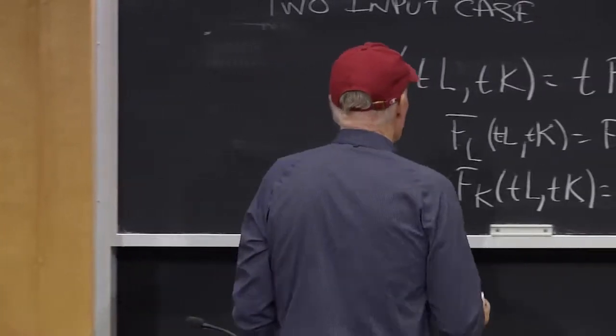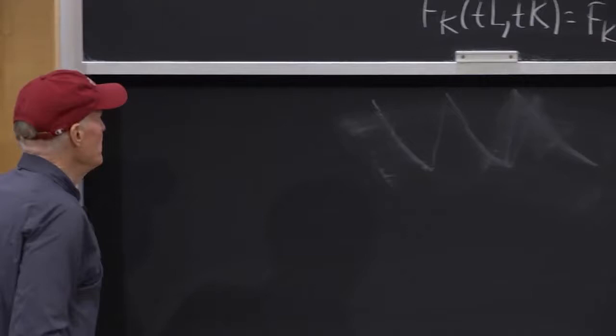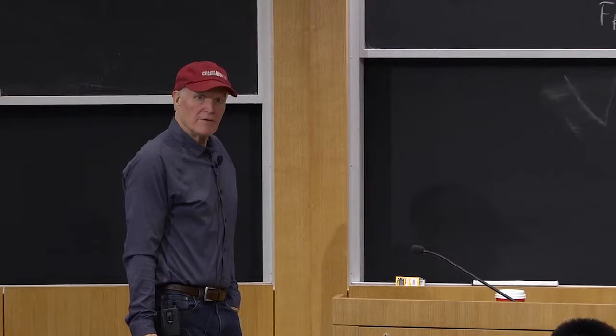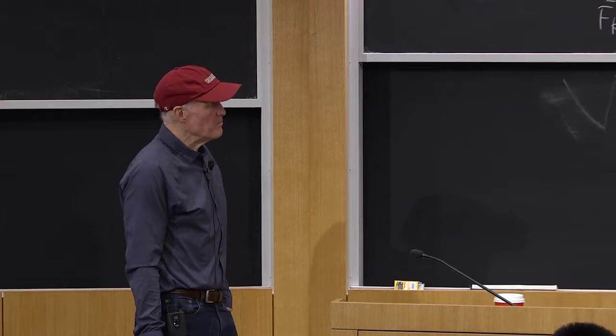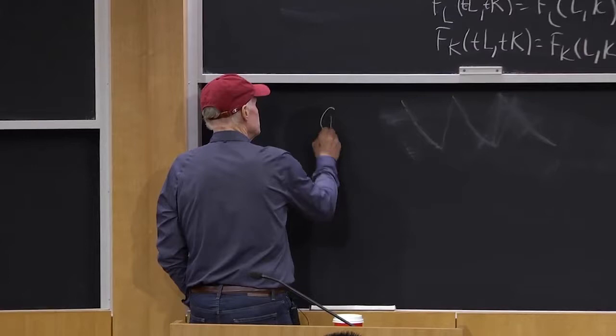What does our constant returns to scale model of the industry look like? What determines output? Let's think about it. What are the equilibrium conditions for my industry?